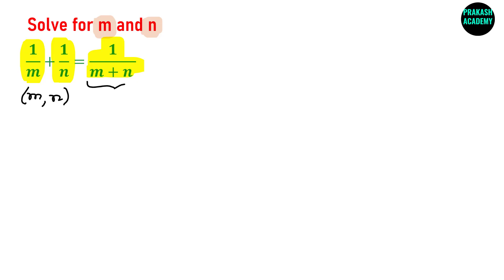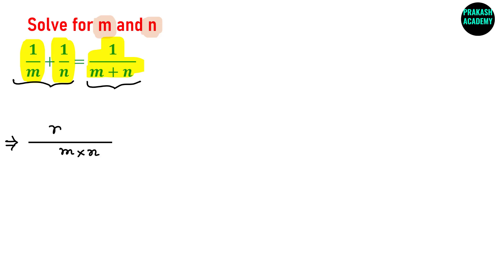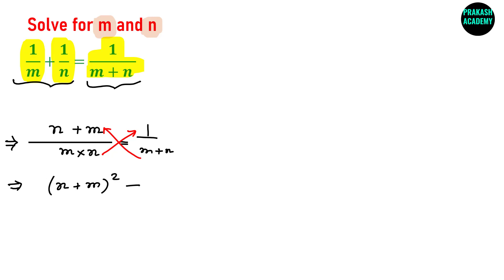On the right-hand side we have one fraction, but on the left-hand side we have two fractions. Let us first convert the left-hand side into one fraction and then try to factorize. The LCM on the left-hand side gives us M times N in the denominator, so we get (N plus M) divided by MN equals 1 divided by (M plus N). Now, doing cross-multiplication, we get (N plus M) whole square equals M times N.